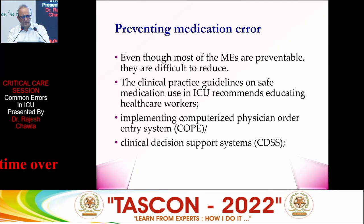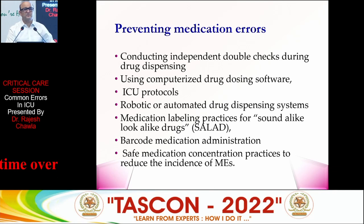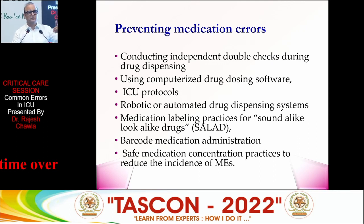Most medication errors are preventable and you can reduce them as far as possible. Suggested solutions include computerized physician orders, clinical decision support systems, independent double checks, computerized drug dosing, and barcode medication administration. One thing that makes a real difference is the intensivist reviewing all drugs on the chart every day — every time you look, you can cut five or six drugs that should not be running. A clinical pharmacist is now a necessity: they come, review the prescription, and point out wrong doses or drug interactions.